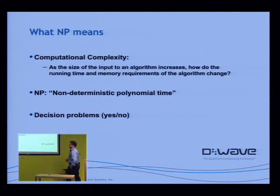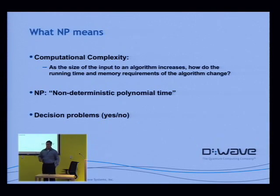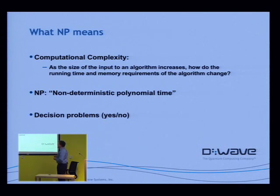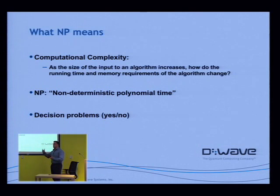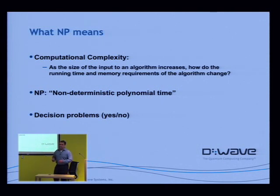A brief digression, because this is a central point. There's a branch of computer science called computational complexity, and the idea is to categorize problems into groups that share similar features. One of the most important things you might want to know is: as you feed an algorithm bigger and bigger problems, how does the resource requirement scale? If you double the size of the problem, what is the additional time consumption? Good algorithms tend to be linear or a little bit worse. Bad algorithms are exponential, in which case you get to a point where you just can't solve a bigger problem.